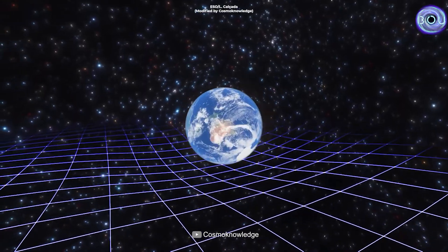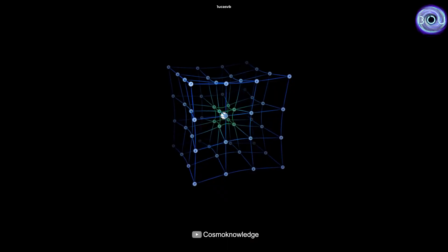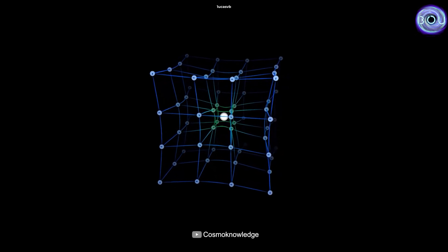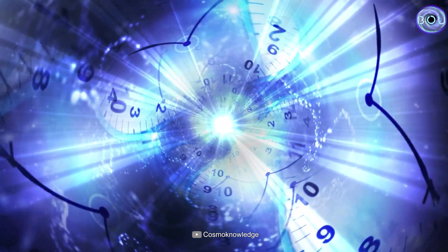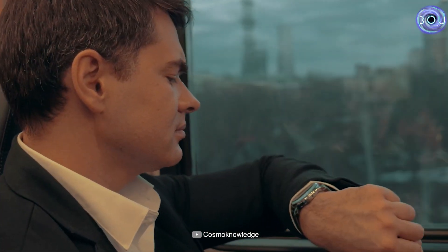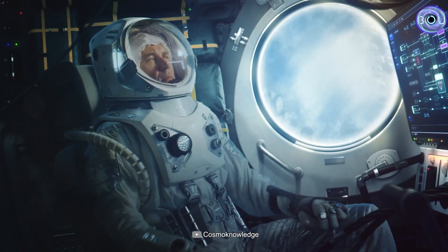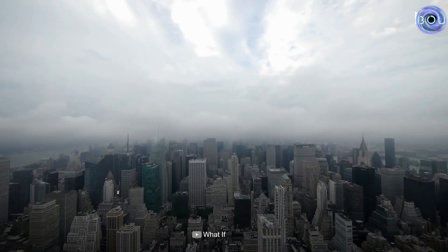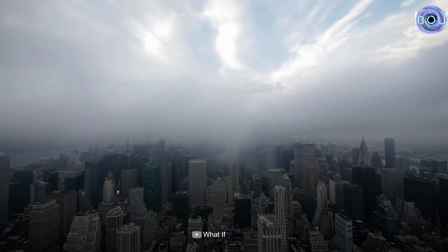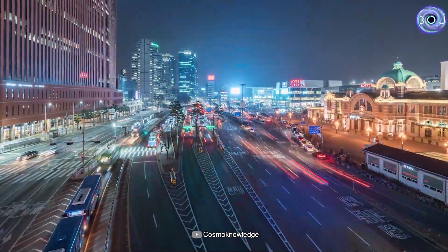The closer we are to this curvature, time will pass slower for us compared to someone who is farther away from this curvature. This means that time does not have a fixed reference frame, and it passes differently for each person relative to another. You might be a bit surprised and confused by what I'm about to say, but imagine you live in a five-story building. You live on the first floor of this building, and your friend lives on the fifth floor.